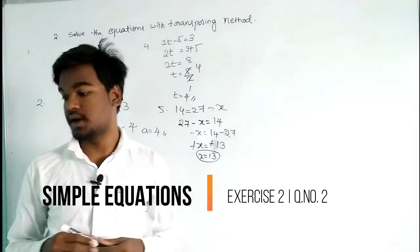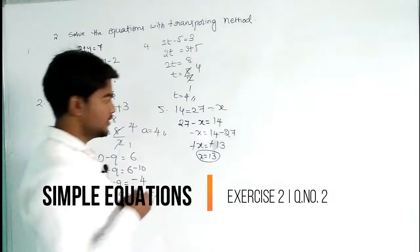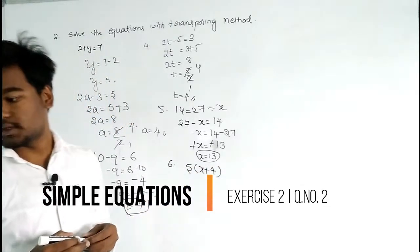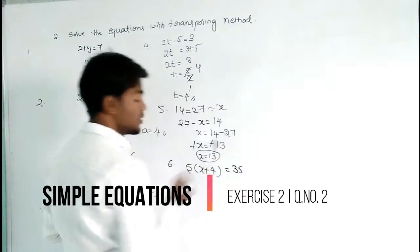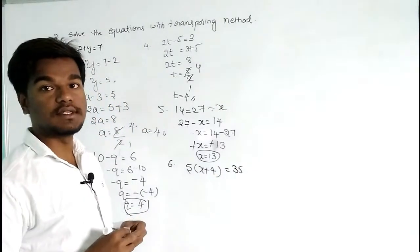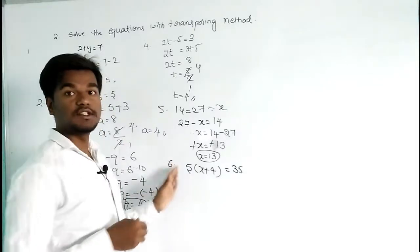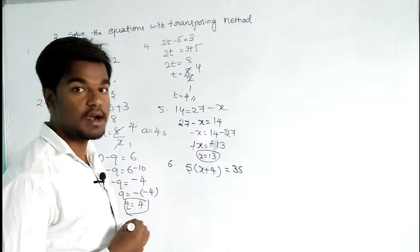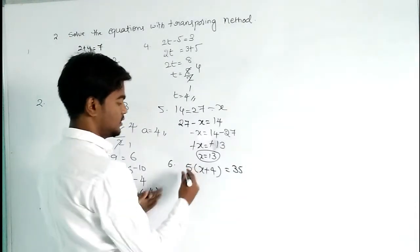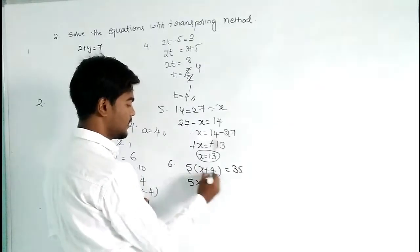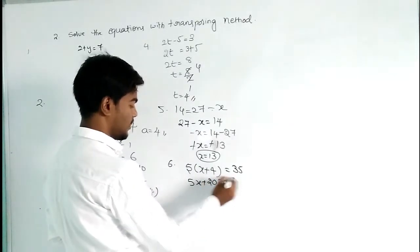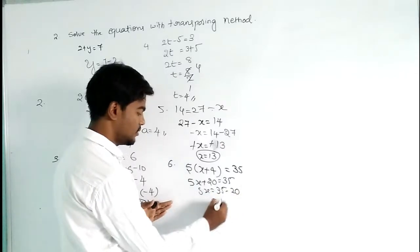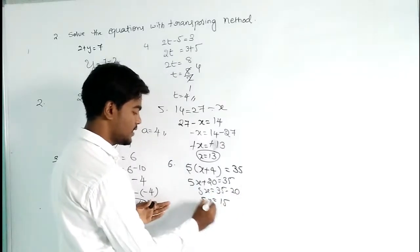Our next question is 5 × (x + 4) = 35. We apply distribution over addition, distributing 5: 5x + 20 = 35. Now transpose 20 to the right side and it becomes minus 20, giving 5x = 15.